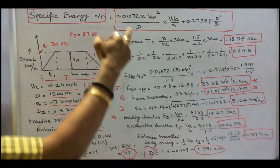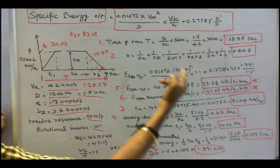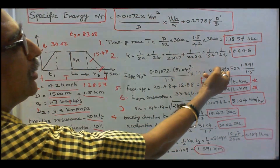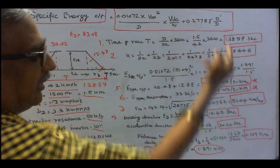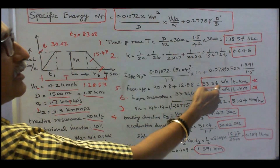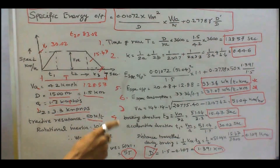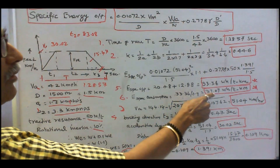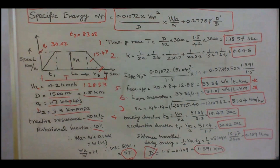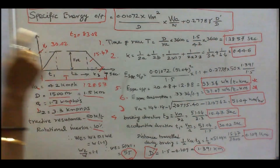Substituting all values: specific energy output = 0.01072 × (51.04)² × 1.1 + 0.2778 × 50 × (1.391 / 1.5) = 33.36 Wh per ton km. With motor efficiency of 90%, specific energy consumption = 33.36 / 0.9 = 37.07 Wh per ton km. The speed-time curve has T1 = 30.02 s, T2 = 83.08 s, T3 = 15.47 s, and total T = 128.57 s.